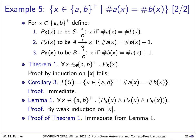P_B(x) is true if and only if we can derive X from B if and only if the number of B's is one more than the number of A's. The theorem we really want to prove — Theorem 1 — is that for all non-empty strings of A's and B's, P_S(x) holds. If we just try proving this by induction on the length of X, our proof will fail because the induction hypothesis won't be strong enough.